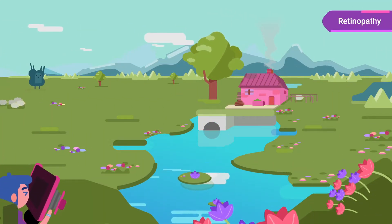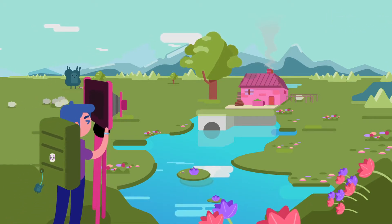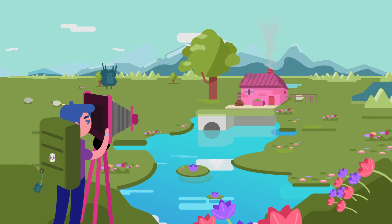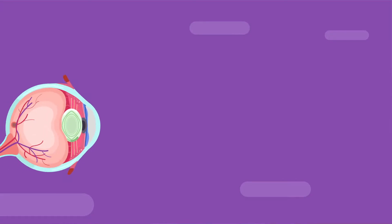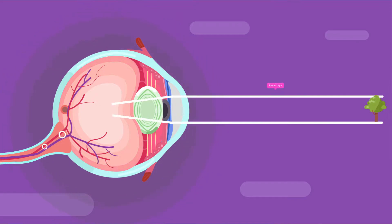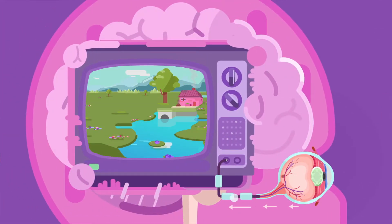Diabetic retinopathy is a chronic complication that decreases visual acuity and can cause blindness. The retina is the inner membrane of our eyes and is responsible for eyesight. It receives rays of light that travel to the brain to allow us to see.